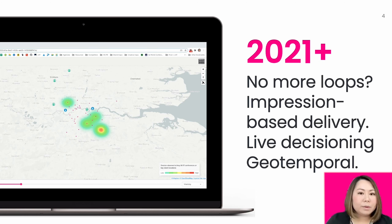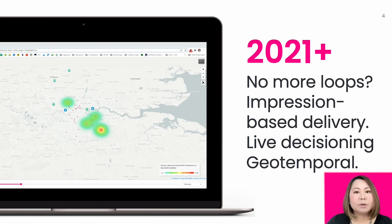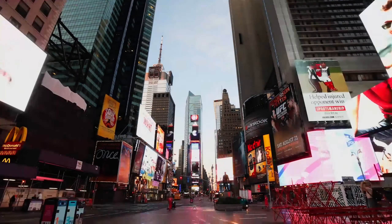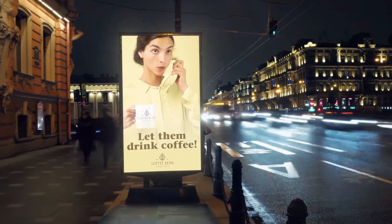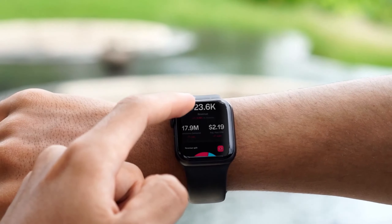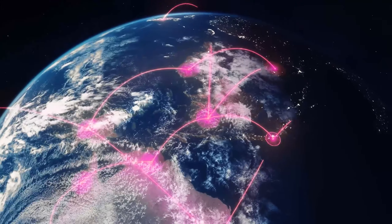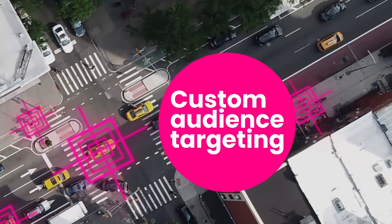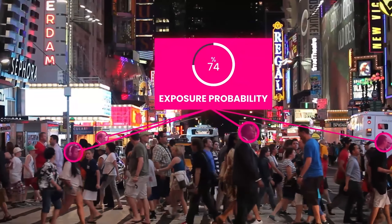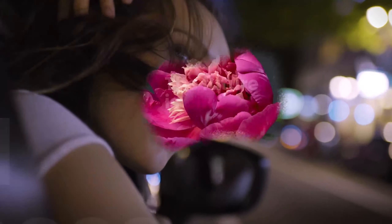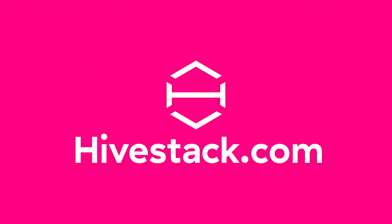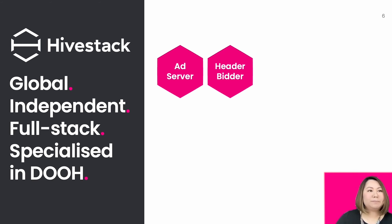So who are we — HiveStack? You may not have heard of this name before, but you will be hearing a lot about HiveStack. Let me show you a short video. Brands, agencies, media owners, and omni-channel DSPs use the HiveStack platform to activate programmatic digital out-of-home with precision globally. Custom audience targeting and unprecedented measurement capabilities drive real-world business outcomes. The future is pink — and pink is actually our HiveStack platform color.